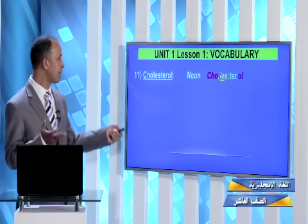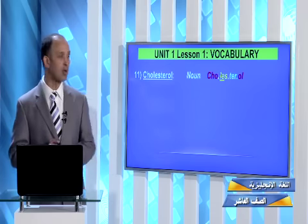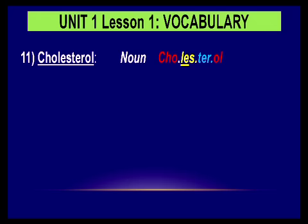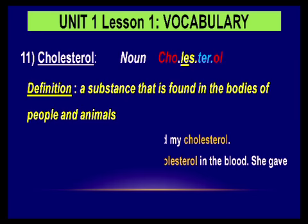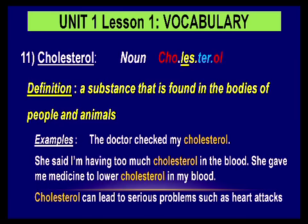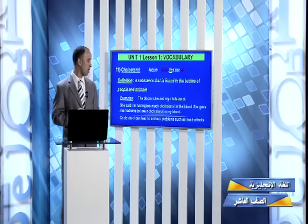The next vocabulary item is cholesterol — you probably all know this word; even in Arabic you say cholesterol. It's a noun and the stress is on cholesterol. It's a substance found in the body and also in food such as meat. For example, if a doctor checks your cholesterol and finds too much, they give you medicine to lower cholesterol, since high cholesterol can lead to serious problems such as heart attacks.